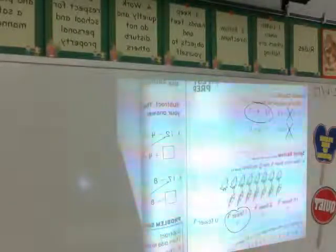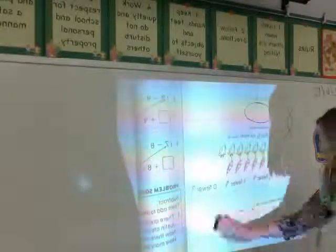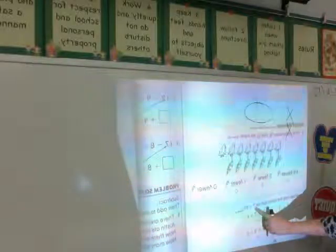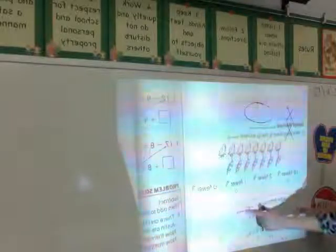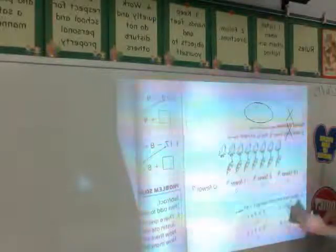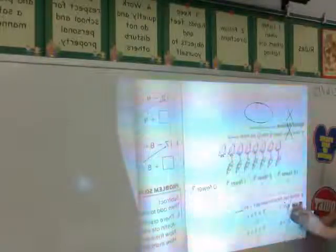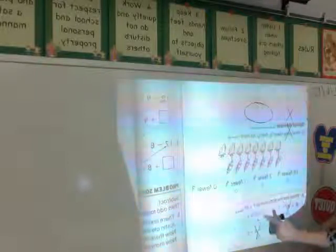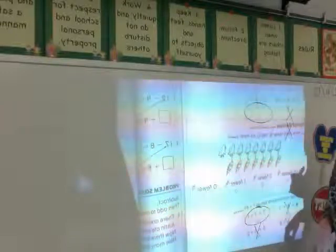Which has the same sum as 7 plus 8? This is a doubles plus 1 fact. So if I have this first addend here, 7 plus 8 is the same as, well, 8 plus 8 plus 1 is 17, and this is 15, so that can't be it. 6 plus 6 plus 2 is 14, so that can't be it. 7 plus 7 plus 1, that's 15, so that's going to be my answer.